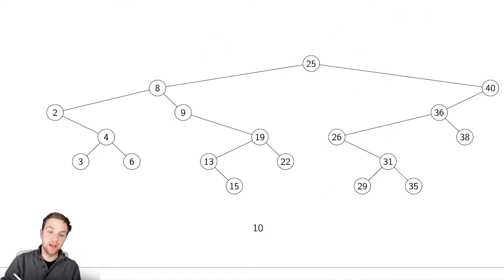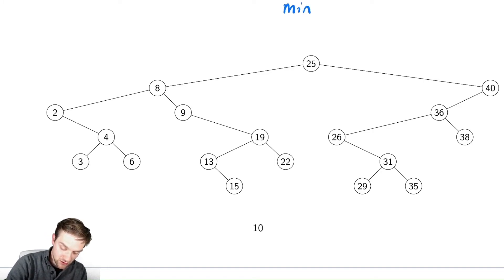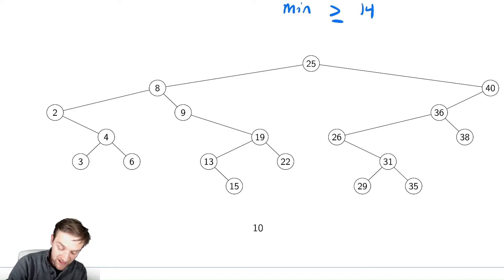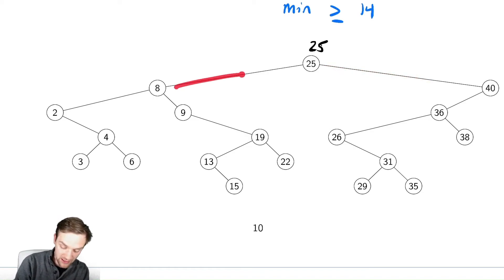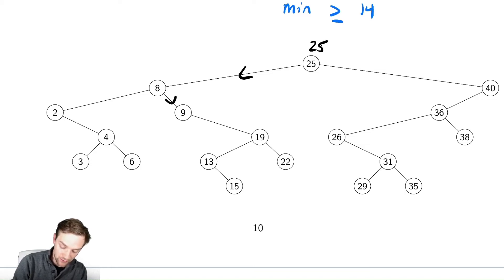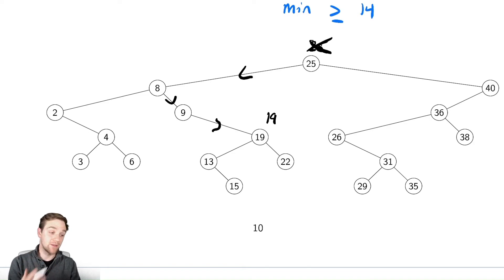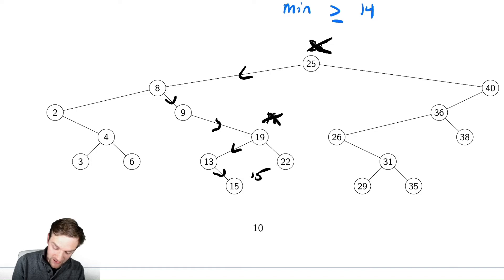The next method is how do we find the minimum value that is still greater than or equal to a particular given value. Say we want to find the min that is ≥ 14. Starting at the root, the best candidate is 25. Any better values can't be to the right, so we go left. 8 is not ≥ 14, so we go right. 9 is not ≥ 14, go right. 19 is ≥ 14, so 19 replaces 25 as our best. We then go left: 13 is not ≥ 14, but 15 is, so 15 is our answer.